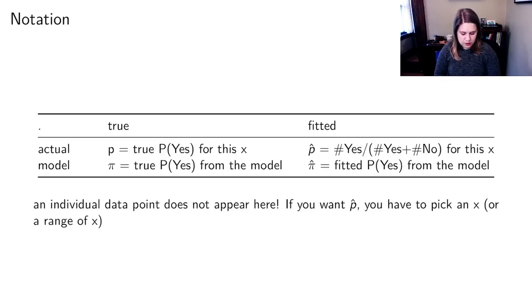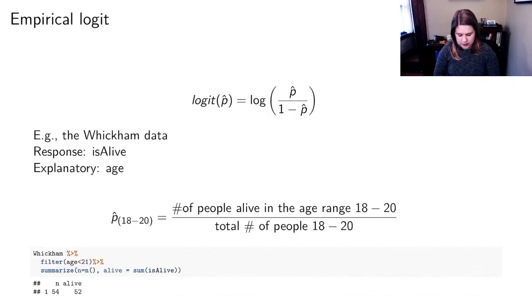So let's think about this a little bit. If I wanted from my Wickham data to find the p-hat for people ages 18 to 20, I would find the number of people who were alive in that age range 18 to 20, and then I would divide by the total number of people 18 to 20.